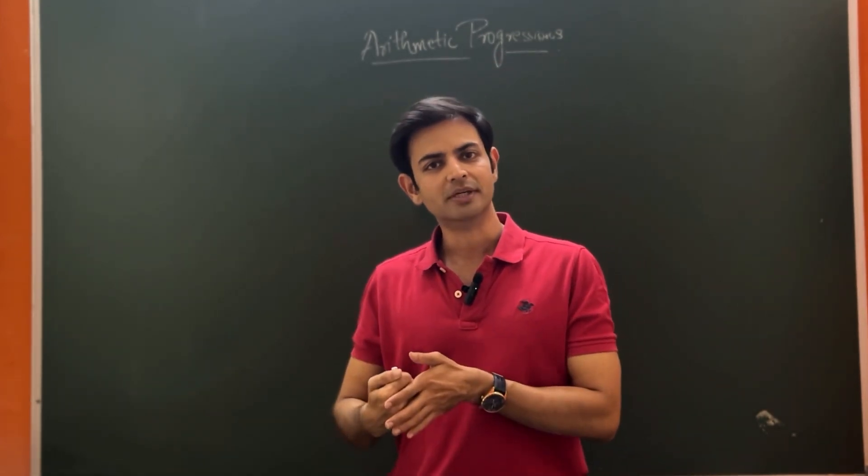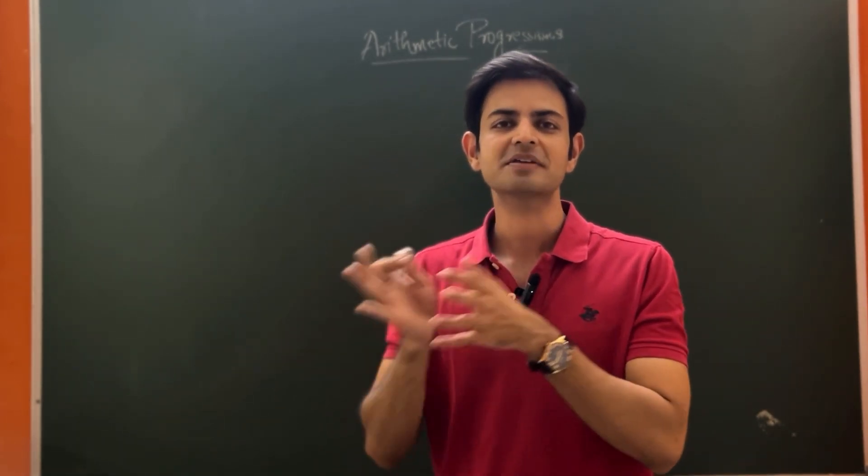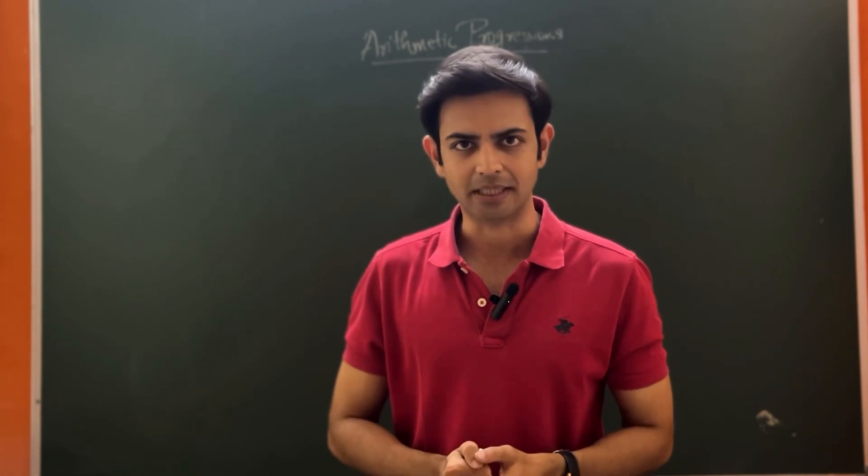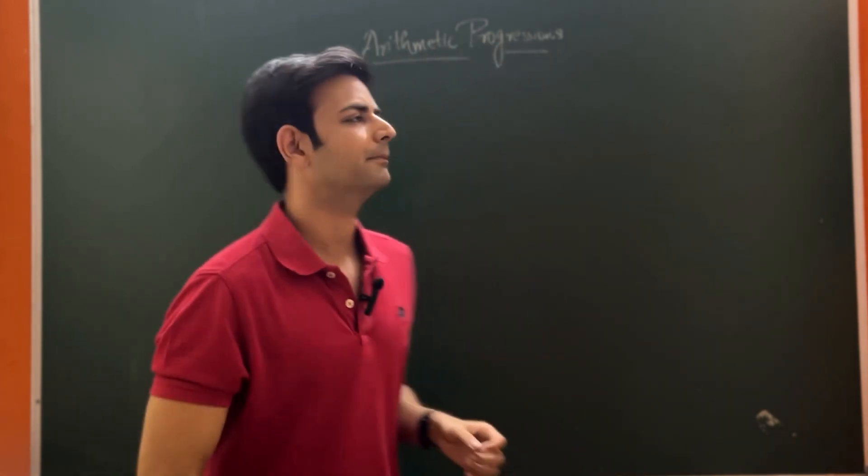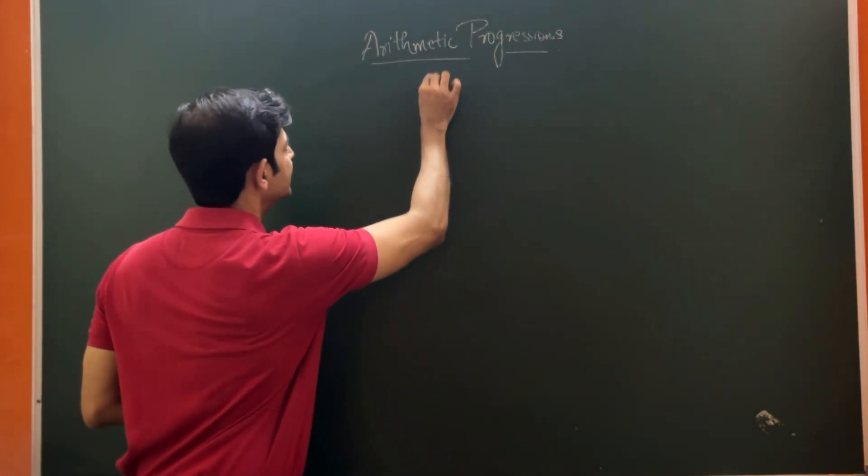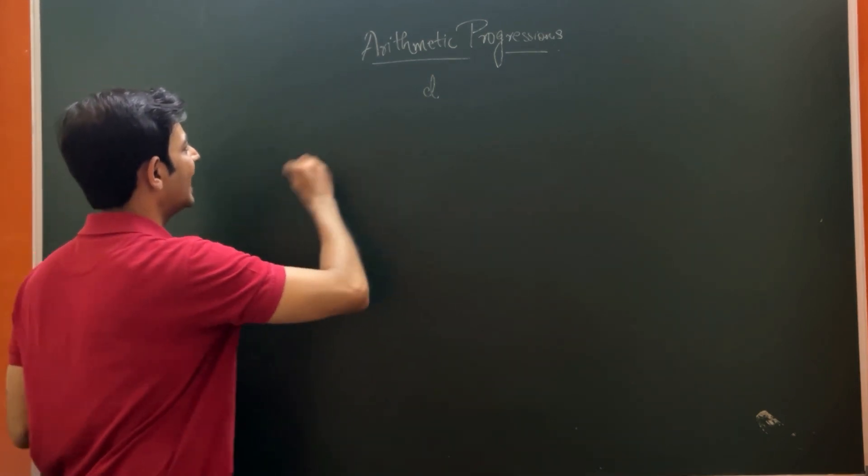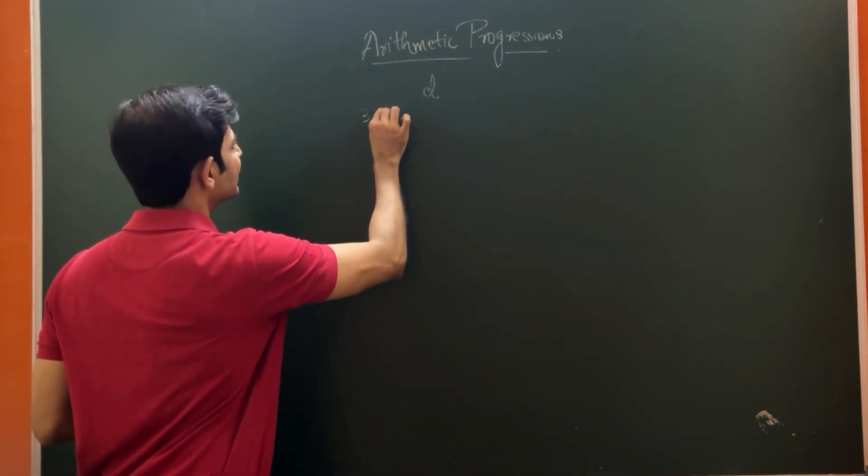In case of arithmetic progression, they are added or subtracted by a particular number. That particular number is called common difference. For example, if I have numbers like 3, 5,